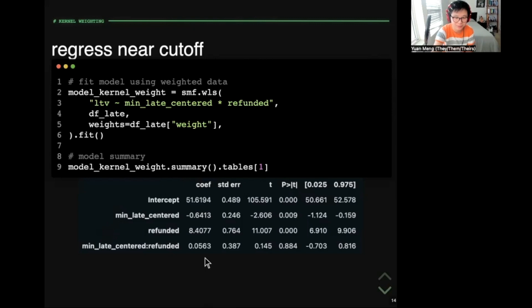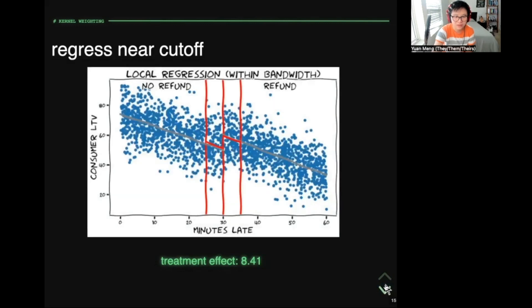We can fit the same model on the weighted data, and here is the new model output. This time, the coefficient of the refund status is a bit smaller than before, it's 8.41. But still, that means this refunding program has a positive impact on customer lifetime values. Compared to the near-losers, near-winners who got the refund have on average 8.41 higher of a lifetime value. Now let's visualize the fitted lines again. The red lines are fitted on the data in the bandwidth, and the gray lines what we saw before, data fitted on all of the late orders. In this case, they're pretty close. That may not always be the case.